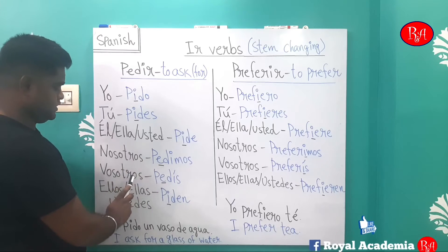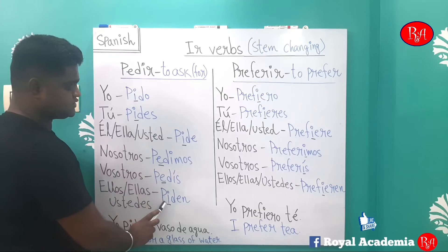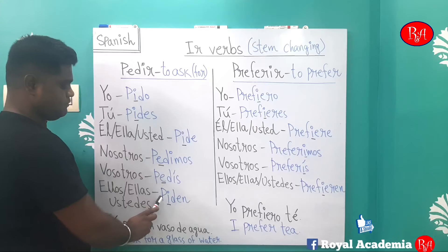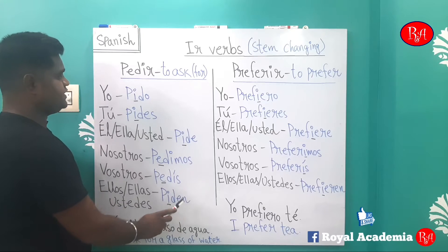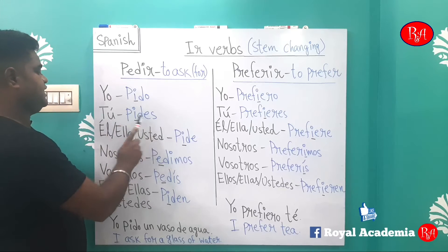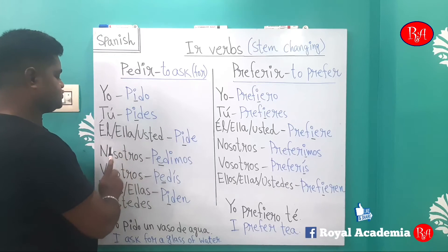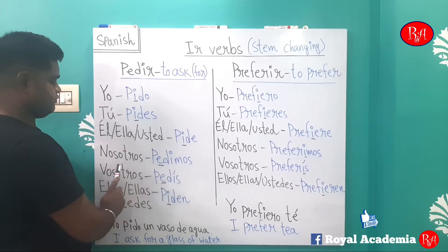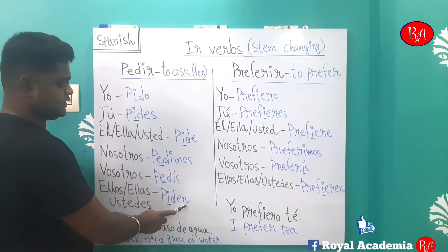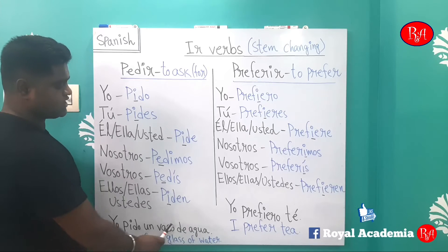The last form, 'ellos/ellas/ustedes', again changes to 'i': 'piden'. So: yo pido, tú pides, él/ella/usted pide, nosotros pedimos, vosotros pedís, ellos/ellas/ustedes piden. For example: 'yo pido un vaso de agua' — I ask for a glass of water.